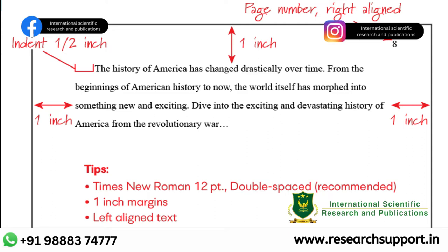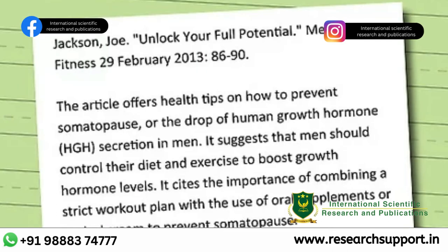Let us move on to how to write an annotated bibliography. For each source, start by writing or generating a full reference entry that gives the author, title, date, and other information. The annotated bibliography format varies based on the citation style you are using, and the annotations themselves are usually between 50 and 200 words in length, typically formatted as a single paragraph. This can vary depending on the word count of the assignment, the relative length and importance of different sources, and the number of sources you include.